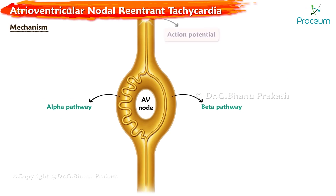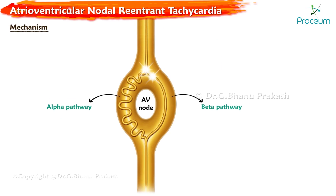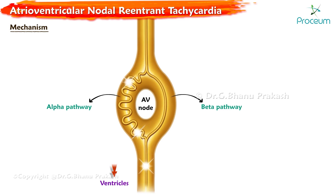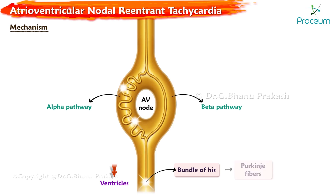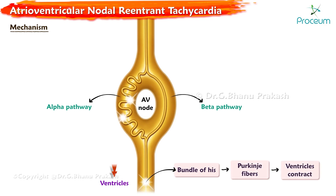When an action potential arrives at the superior portion of the AV node, the impulse splits and travels down the alpha and beta pathways. Because the beta pathway is faster, it reaches the terminal portion of the AV node quickly, and from there travels to the bundle of His and finally reaches the Purkinje fibers and ventricles. At the same time, the impulse from the beta pathway also enters the alpha pathway and collides with the impulse traveling down the alpha pathway, and they cancel each other.